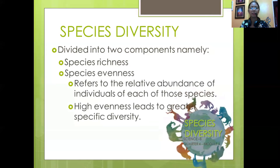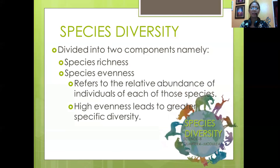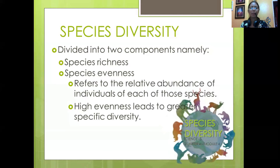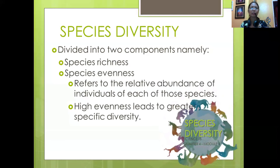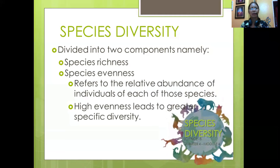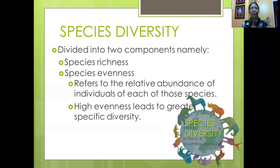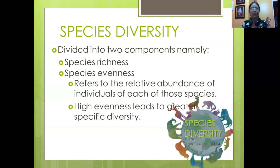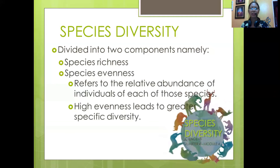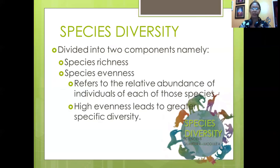When it comes to species evenness, it refers to the relative abundance of individuals of each species. High evenness leads to greater species diversity. For example, in a forest ecosystem: one hundred monkeys, one hundred pythons, fifty hedgehogs, twenty herons, and ten tigers — counting the relative abundance of individuals of each species is what we call species evenness. That is the difference between the two components of species diversity.